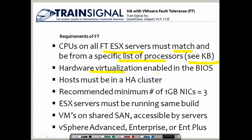The second requirement is that hardware virtualization must be enabled in the BIOS. All hosts providing fault tolerant services must be in an HA cluster. There's a recommended minimum of three gigabit ethernet NICs on each server to isolate fault tolerant logging traffic onto its own NIC — it's a soft requirement, but recommended for production. The ESX servers must run the same build of vSphere, virtual machines must be on shared SAN storage accessible by all servers, and you must be using vSphere Edition Advanced, Enterprise, or Enterprise Plus.